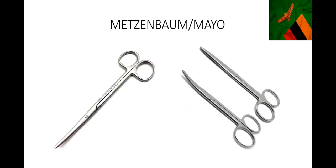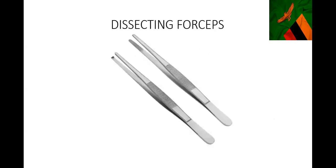These are scissors - Mayo and Metzenbaum scissors. The one on the left is really a dissecting scissors when you want to dissect somewhere, and the ones on the right you'd use maybe to cut something. These are dissecting forceps - we all know them for holding onto tissue as we are suturing or dissecting.